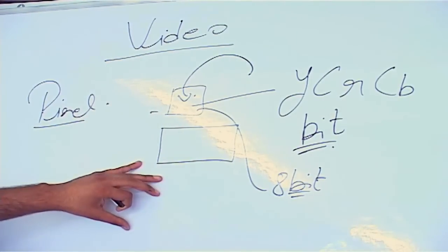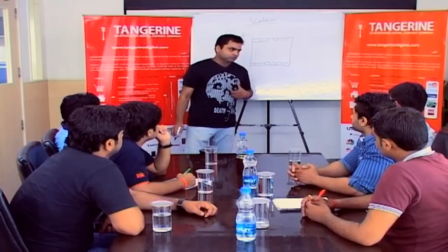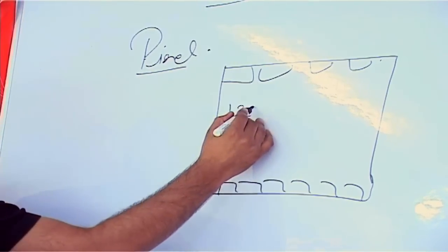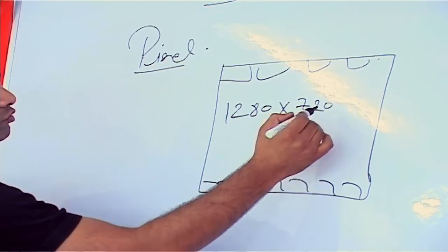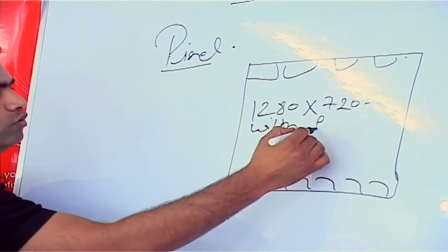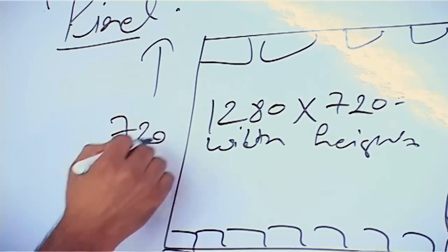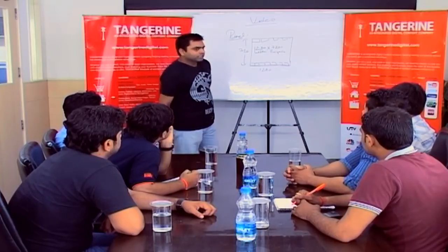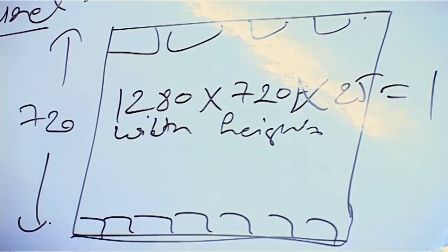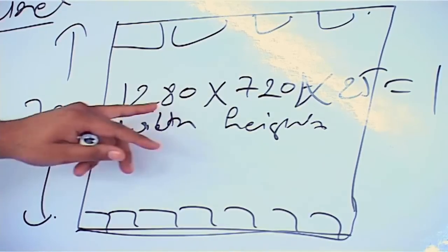What is square pixel and rectangular pixel and how it forms a resolution? A video image is formed of many pixels. What defines how many pixels would be in the video is our resolution. Let us have a resolution of 1280 into 720 — denoted as width into height, where 1280 is the width and 720 is the height. The total number of pixels per second can be calculated as 1280 into 720 into 25.